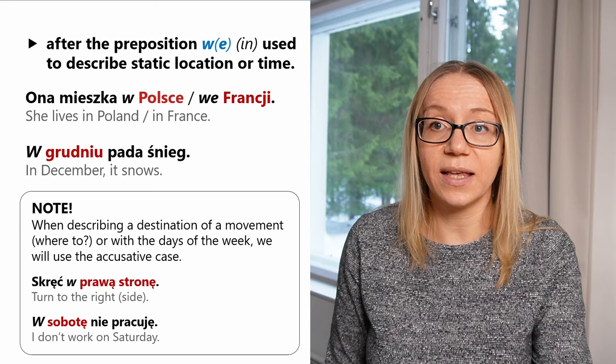On mieszka w Ameryce — He lives in America. Ona mieszka w Europie — She lives in Europe. Oni mieszkają w Kanadzie — They live in Canada. Mieszkacie w Wielkiej Brytanii? — Do you live in Great Britain? Nigdy nie byłam we Francji — I have never been to France.